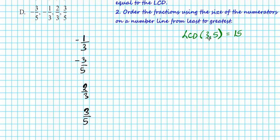If you look at these two numbers, they're co-prime — neither can go into the other — so if you multiply them together, that gives you the LCD, which is 15. The goal here is to convert all the fractions to equivalent fractions with denominators equal to the LCD.